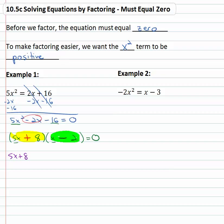5x + 8 = 0 and x - 2 = 0, and we can solve these two equations. Subtract eight from the first one, we get 5x = -8. Divide by five and x equals the fraction negative eight fifths. Or in the second equation, add two to both sides and x = 2.